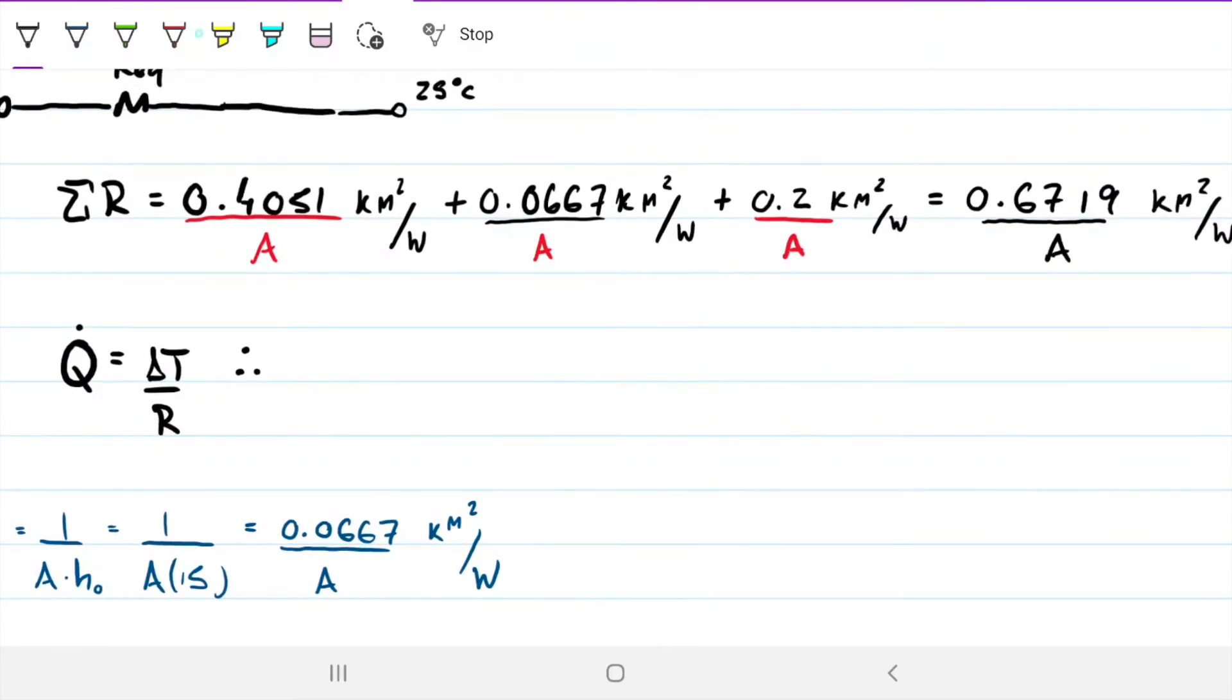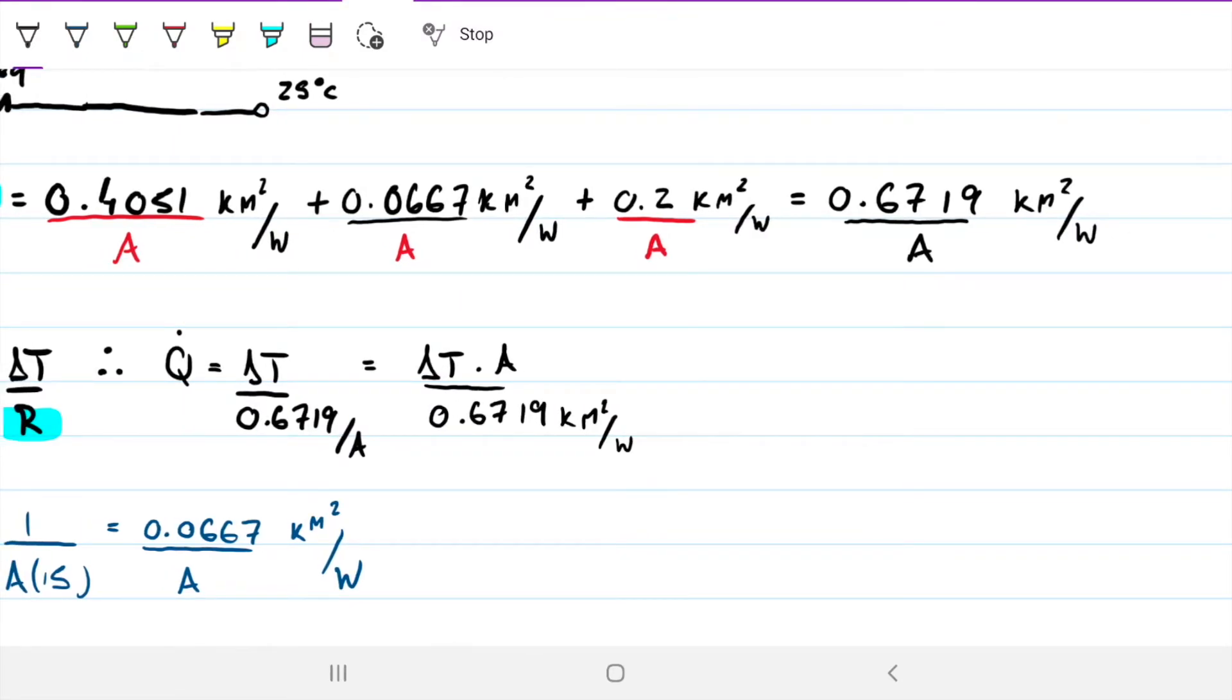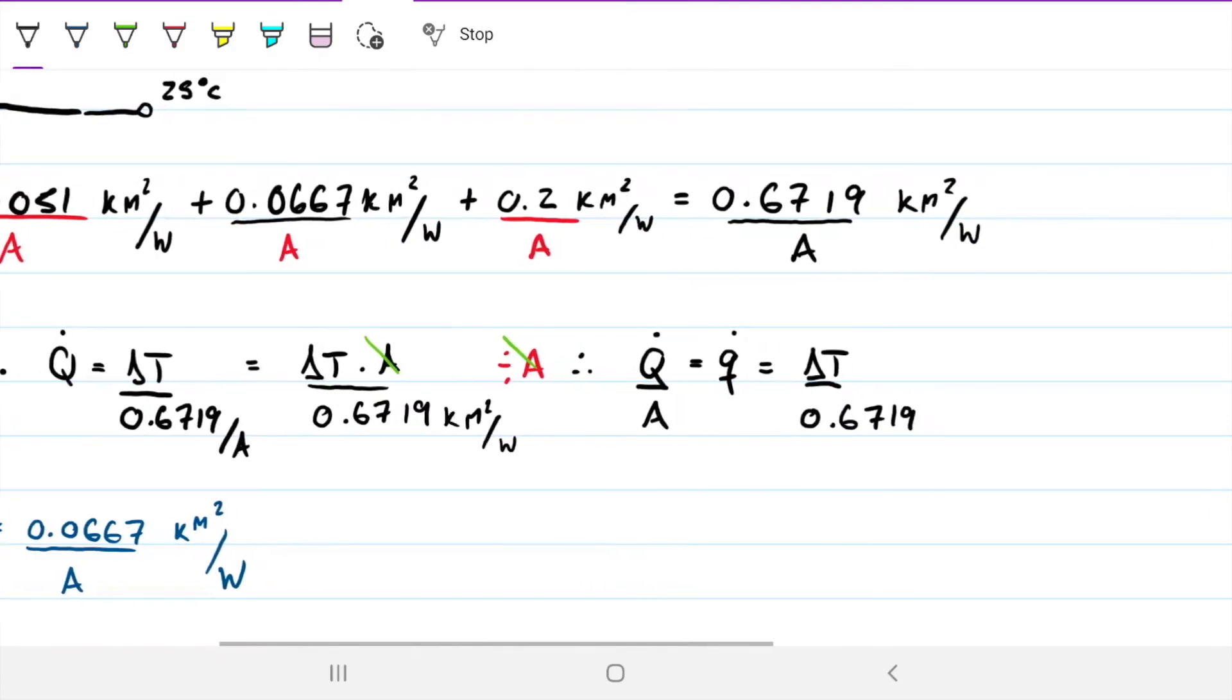Now when we're substituting this R into the equation, we're going to have Q equals the delta T divided by 0.6719 divided by the area. This is the same thing as delta T times area divided by 0.6719, with units of kelvin meter squared per watt. Now we're after heat flux, not heat per se, so we can divide on both sides of the equation by the area. This becomes Q dot over A which we know is the same thing as heat flux, small q.